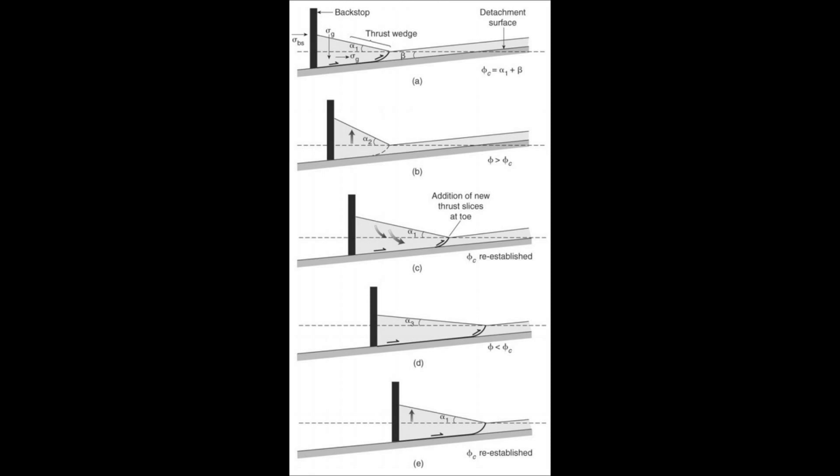If the taper angle becomes too large, processes take place within the wedge to cause the surface slope to decrease, as in figure C. The wedge slides towards the foreland and new material is added to the toe, causing an extension of the wedge so that the surface slope decreases.